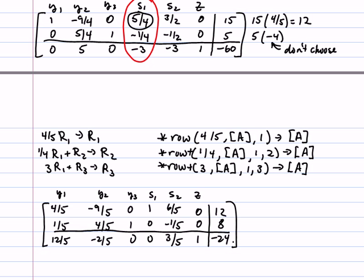Notice yet again we are still feasible. Y sub 1 and Y sub 2 are 0, Y sub 3 is a positive 8, S sub 1 is a positive 12, S sub 2 is 0. So we are feasible, but we are not yet optimal because there is still another negative entry in the last row.